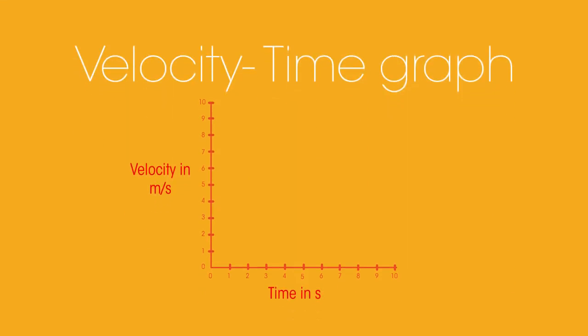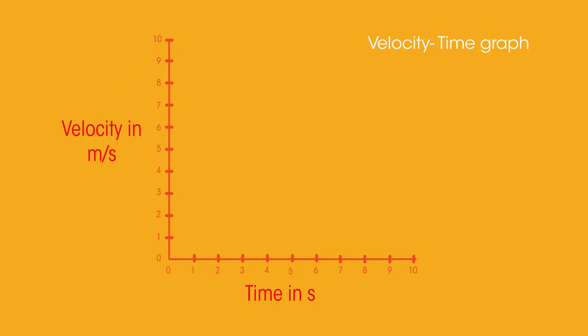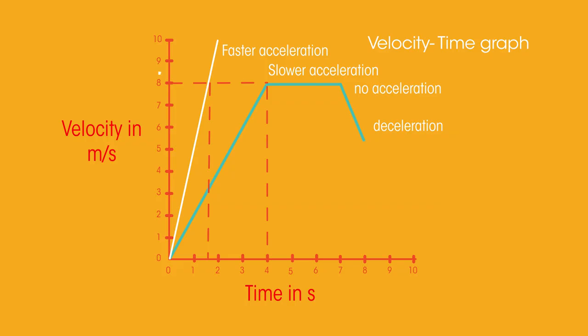If we look at acceleration on a velocity time graph, the different options look like this. This is faster acceleration than this because it's steeper, so it's reaching each velocity in less time. No acceleration is happening. And then decelerating, so slowing down, is coming back from 8 meters per second velocity back down to 0 meters per second.